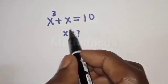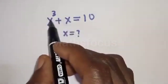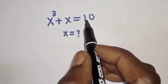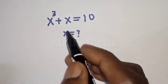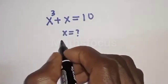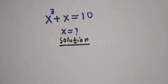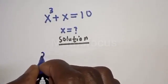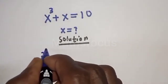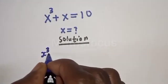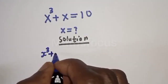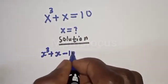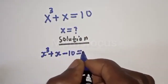Hello. To find the value of s from this equation: s raised to power 3 plus s is equal to 10. Like, share, comment and subscribe. Solution: we have s raised to power 3 plus s minus 10 is equal to zero.